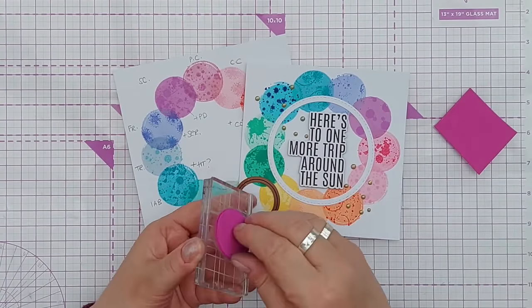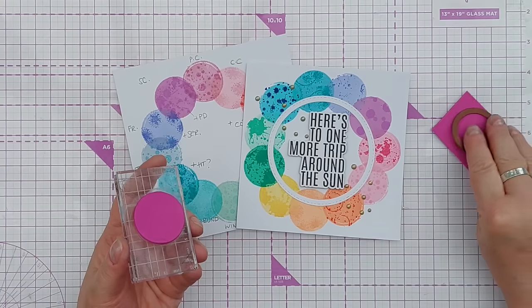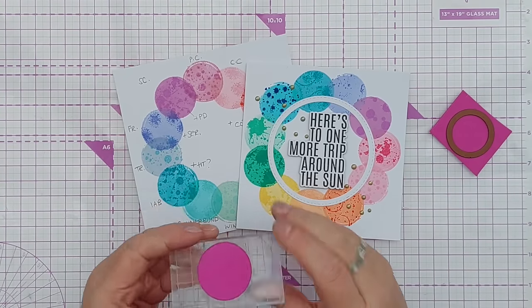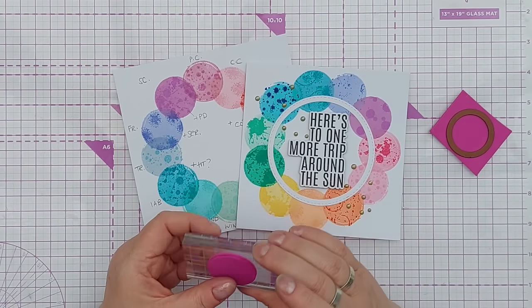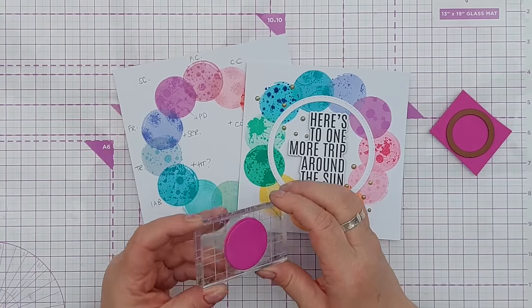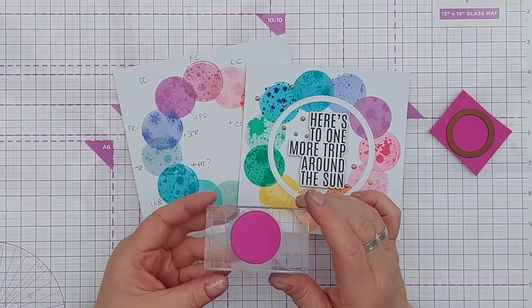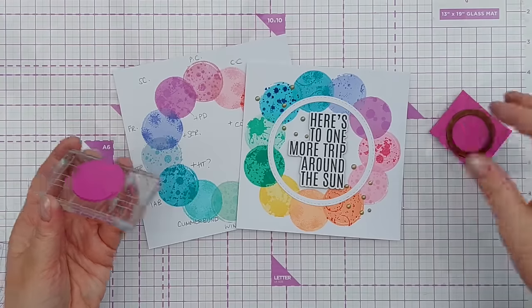So here I have the stamp that I made. It's actually two of these circles cut out of craft foam, layered one on top of the other and then stuck to an acrylic block with some stick glue. These make great stamps, they don't give you perfect impressions but they give you fun impressions.